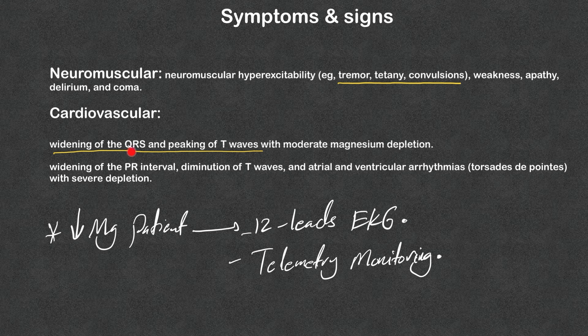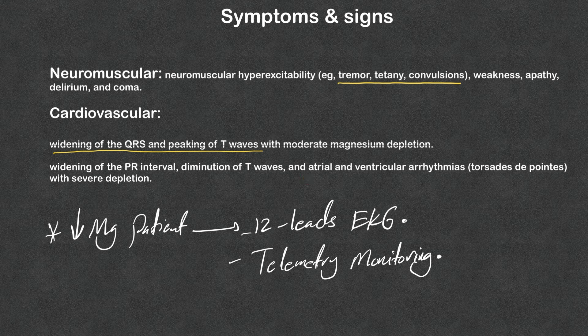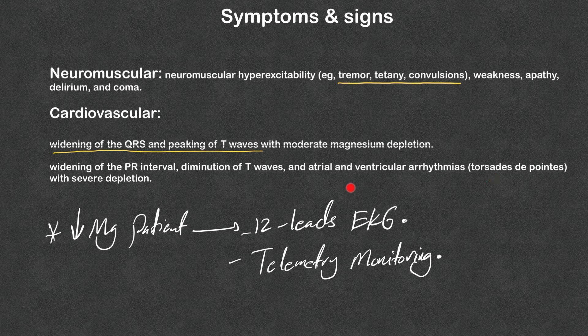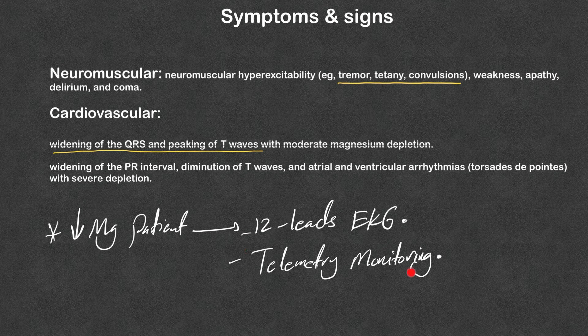Cardiovascular: widening of the QRS and peaking of T-waves similar to hyperkalemia, but this can happen with moderate magnesium depletion. Widening of the PR interval, diminution of T-waves, and atrial and ventricular arrhythmias. Mainly remember torsades de pointes, but all ventricular arrhythmias can happen with severe hypomagnesemia. Any patients with hypomagnesemia should get a 12-lead EKG and should be placed on telemetry monitoring in the hospital.